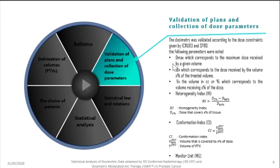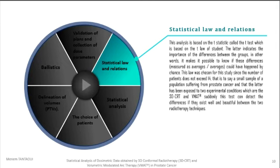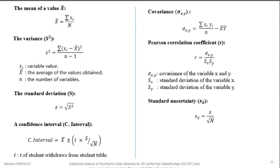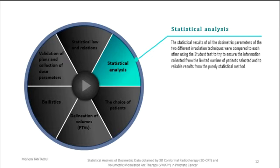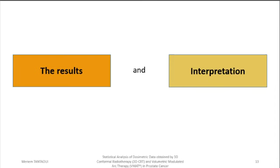After validation, we noted the following dosimetric parameters. Since this study focused on the statistical comparison of the dosimetric parameters obtained by two different radiotherapy techniques, which are 3D CRT and VMAT, this statistical study is based on Student's law, since the number of patients is between 4 and 30. We used the following mathematical relations for the calculation, which we integrated into programs based on the C language. The statistical results of all dosimetric parameters of the two different irradiation techniques were compared using the student test to ensure the information collected from the limited number of patients selected and to validate results from purely statistical methods.